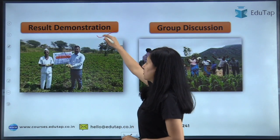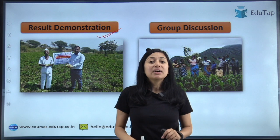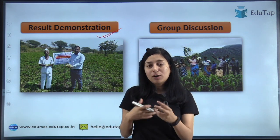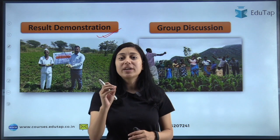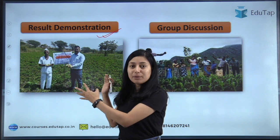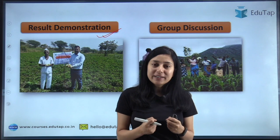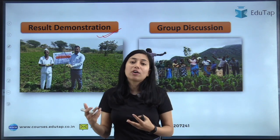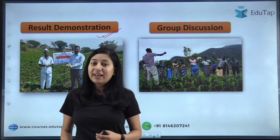Moving on to result demonstration. In method demonstration, the extension worker shows the method themselves. But in result demonstration, the extension worker supervises the farmer — he will not do it himself. The farmer adopts the technology and demonstrates it to other farmers. Whenever a farmer adopts a new technology and gets a good yield, other farmers are also inspired. That is the purpose of result demonstration: the extension worker supervises a farmer, the farmer does the work under that supervision, and the results inspire other farmers to adopt the same.